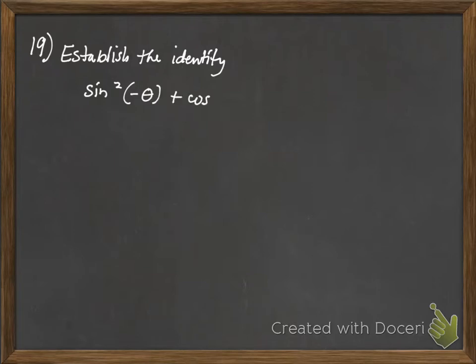So 19 says to establish the identity. So it starts off by saying we have sine squared of negative theta plus cosine squared of negative theta equals 1. Now, I'm going to go ahead and work on the left-hand side, and the reason why is it's much more complicated than the right. There's nothing I can do with the right-hand side. I'm going to rewrite this a little bit. First of all, I'm going to take care of the even odd.